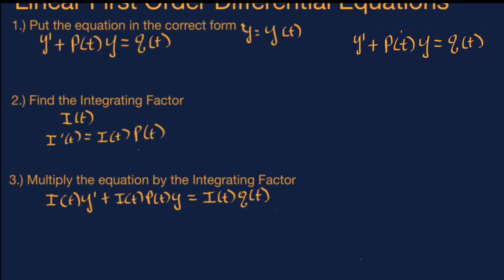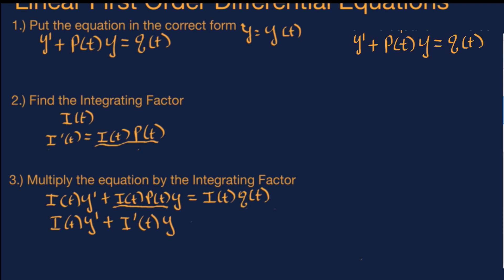Remember in step two, we said that the derivative of the integrating factor i(t) equals i(t) times p(t), which is exactly what we have here as the coefficient of y. So we can replace that part of the equation with the derivative of i. We get i(t) times the derivative of y, plus the derivative of i(t) times y, equal to i(t) times q(t). What we have on the left side is the product rule in terms of i(t) and y, so it can be rewritten as the derivative of i(t) times y.